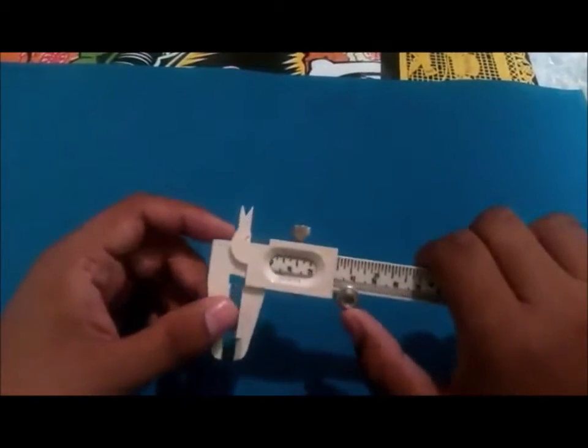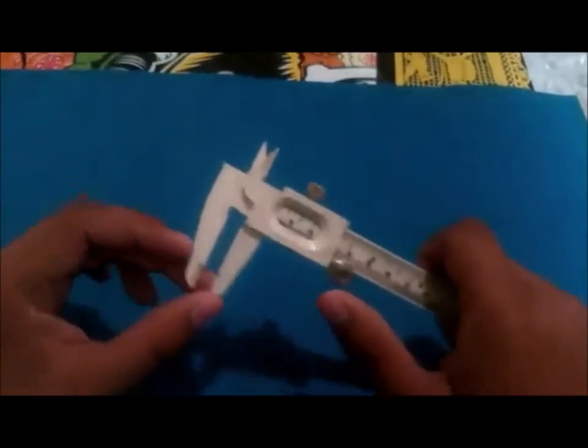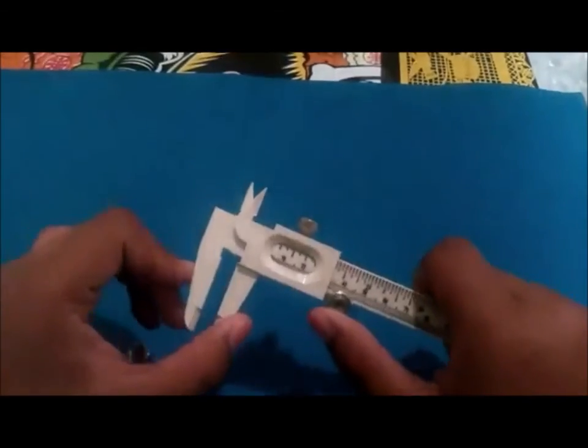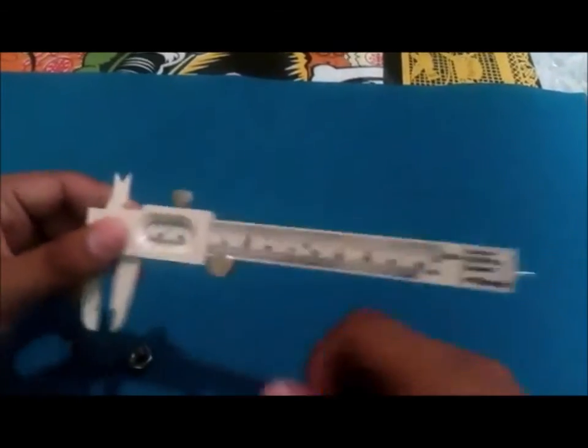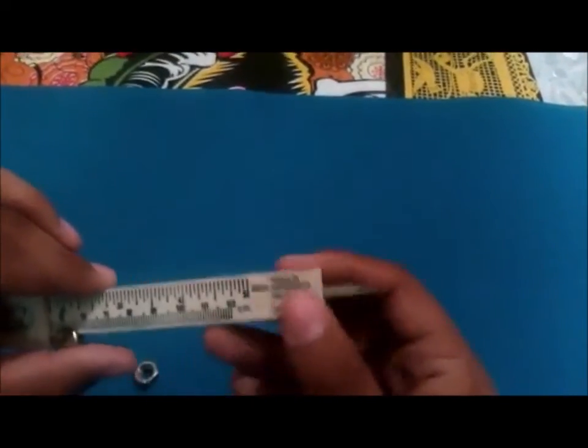Las partes del pie de rey son las mordazas para diámetros exteriores, diámetros interiores y de profundidad.